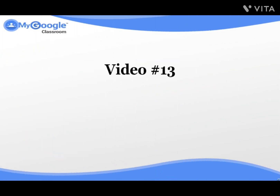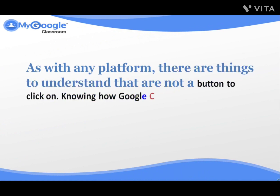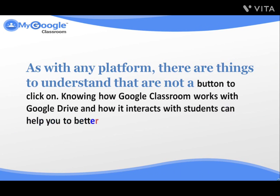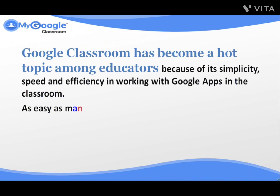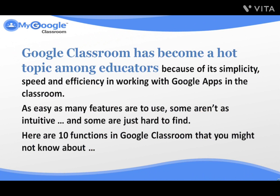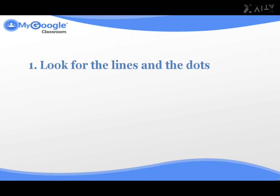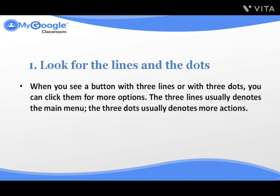My Google Classroom, Video number thirteen: Things You Might Not Know About Google Classroom. As with any platform, there are things to understand that are not just a button to click on. Knowing how Google Classroom works with Google Drive and how it interacts with students can help you better use Classroom. Google Classroom has become a hot topic among educators because of its simplicity, speed, and efficiency in working with Google Apps. Some aren't as intuitive and some are just hard to find. Here are ten functions in Google Classroom that you might not know about. Number one: Look for the lines and the dots. When you see a button with three lines or three dots, you can click them for more options. The three lines usually denotes the main menu; the three dots usually denotes more actions.